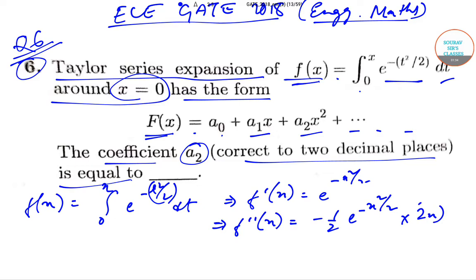This gives us f''(x) = -x · e^(-x²/2). Evaluating at x = 0, we find f''(0) = 0.